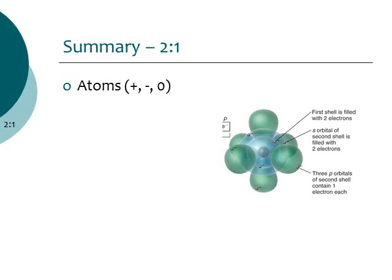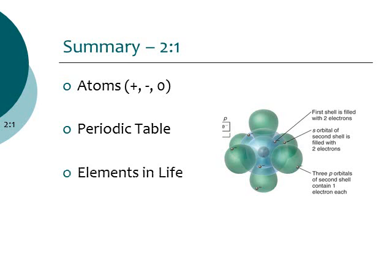So in this first part of chapter 2 we looked at atoms — remember atoms have protons, which have a positive charge and are found in the nucleus; electrons, which have a negative charge and are found in electron shells; and neutrons, which have a neutral charge. These atoms, when they're specific types, are called elements, and those elements are organized on the periodic table. Finally, we looked at the elements most important for life: oxygen, carbon, hydrogen, and nitrogen.